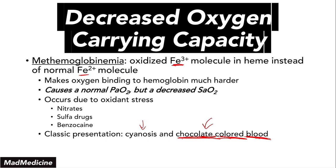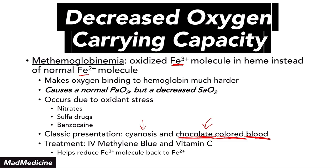In terms of treatment for methemoglobinemia, the classic treatment is IV methylene blue, with vitamin C as the ancillary treatment. An easy memory trick: methemoglobinemia is treated with methylene blue. Since patients are cyanotic and appear blue, you give them IV methylene blue. IV methylene blue and vitamin C help reduce the methemoglobin product from Fe3+ back to the normal Fe2+ state through a reduction reaction, reversing the pathologic condition and allowing oxygen to once again bind to hemoglobin.